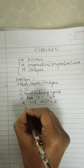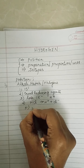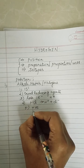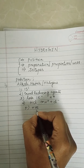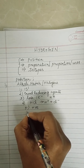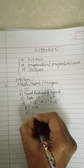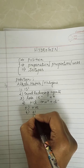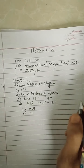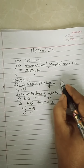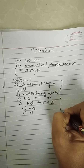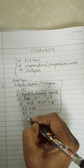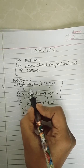Fifth property: hydrogen is electropositive like alkali metals. And regarding its oxidation state, it shows a +1 oxidation state like alkali metals. So these are the 6 properties which tell us that hydrogen resembles alkali metals.